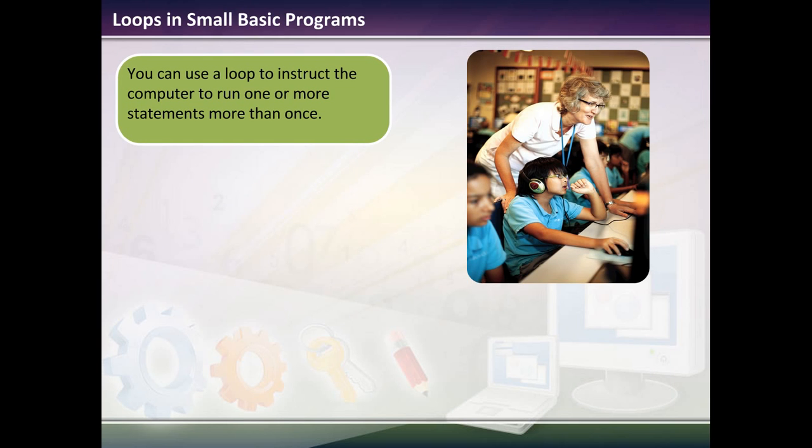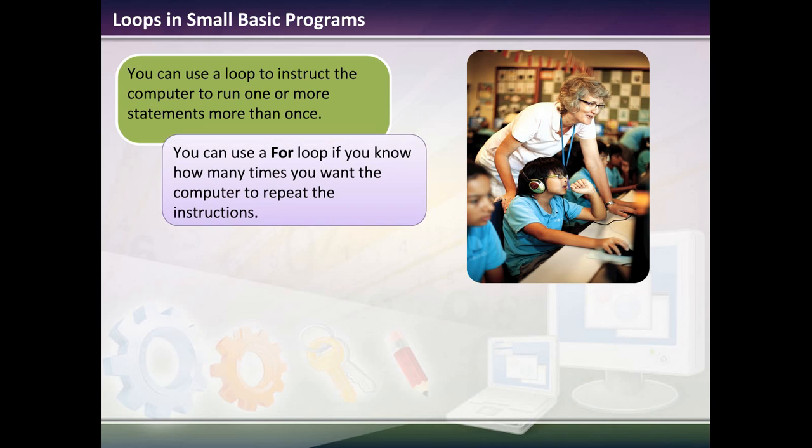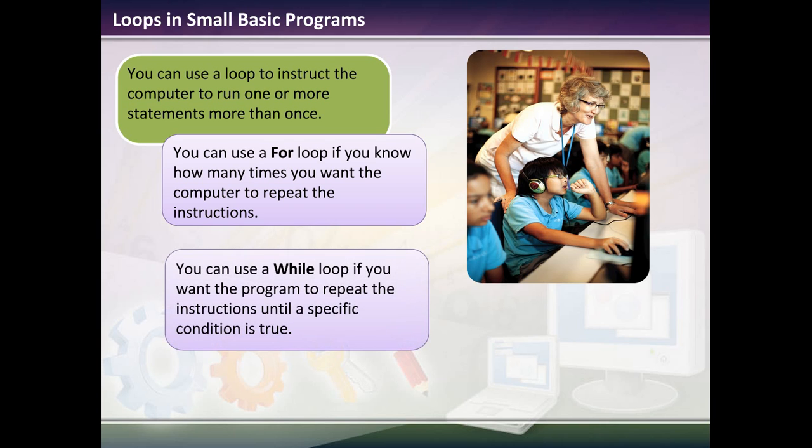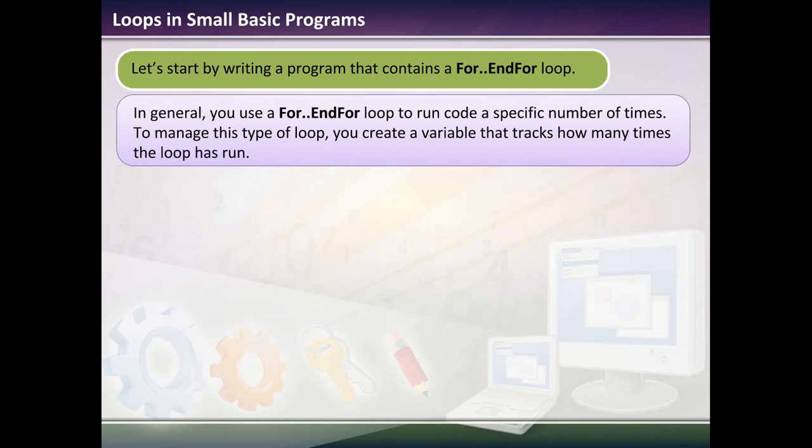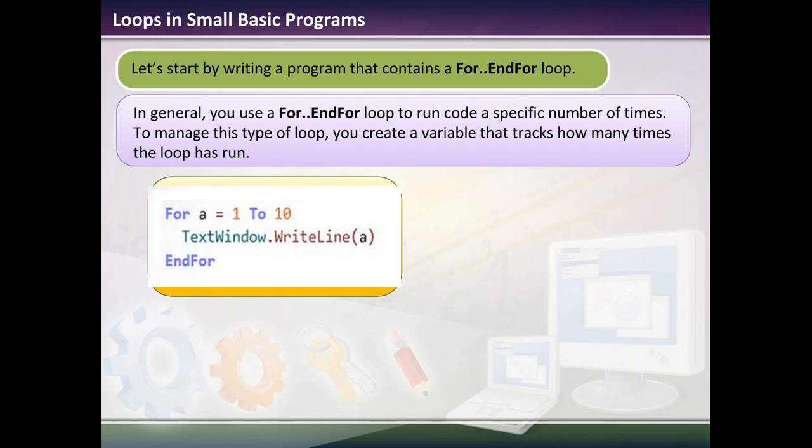Loops in Small Basic programs. You can use a loop to instruct the computer to run one or more statements more than once. You can use the for loop if you know how many times you want the computer to repeat the instruction. You can use the while loop if you want a program to repeat the instructions until a specific condition is true. Let's explore some loop statements. In general, you use a for-endfor loop to run code a specific number of times. You create a variable that tracks how many times the loop is run. In this one, we would say for a equals 1 to 10. Then we would write in the text window the variable a, endfor.